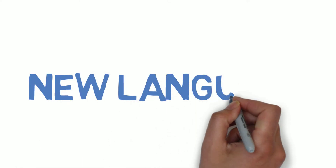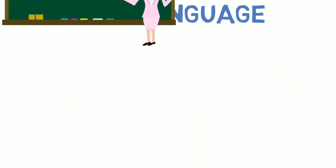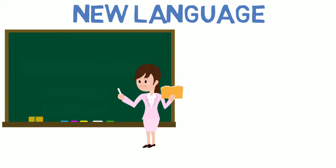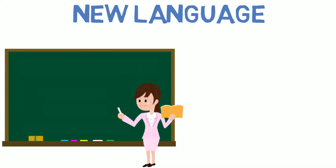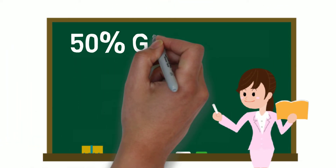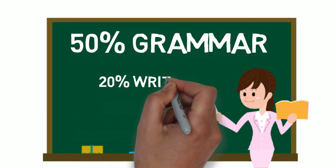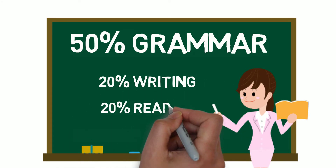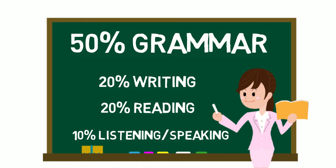We can apply the 80-20 rule to learning a new language, and this one is a personal example. English is not my main language. For many years in school I studied English, and the way it was taught was as follows: 50% of the time was dedicated to grammar, 20% to writing, 20% to reading, and 10% to listening and speaking.